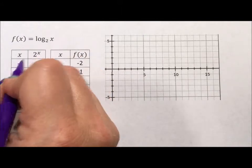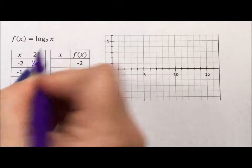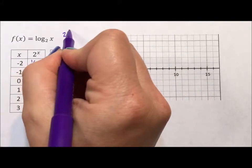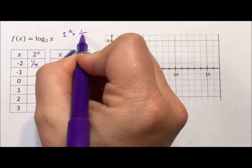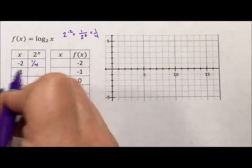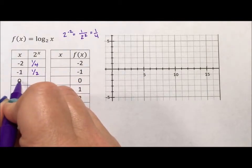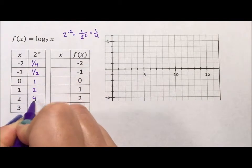Okay, well 2 to the power of negative 2 is 1 fourth. Why? Well 2 to the negative 2, that negative means drop it to the denominator, 1 fourth. Right, 2 to the negative 1 is 1 half. Anything to the power of 0 is 1, 2, 4, 8.